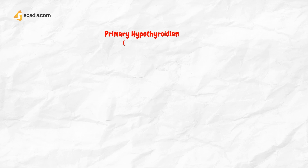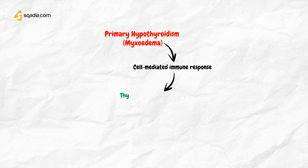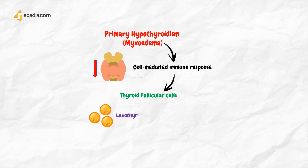Primary hypothyroidism, or myxoedema, probably results in most cases from a cell-mediated immune response directed against the thyroid follicular cells. Levothyroxine is the drug of choice for replacement therapy because it has a longer half-life than liothyronine and can be given once daily.